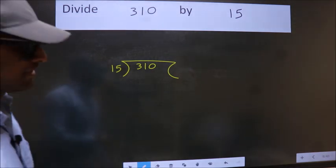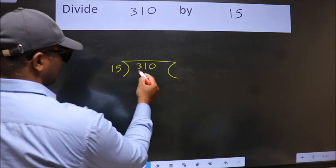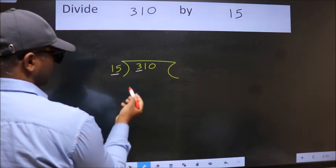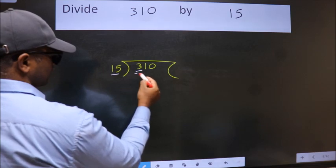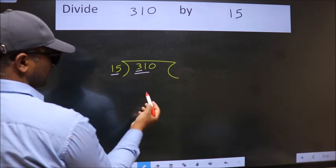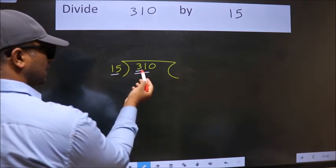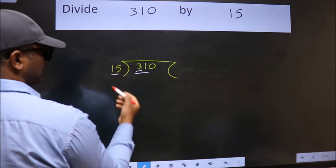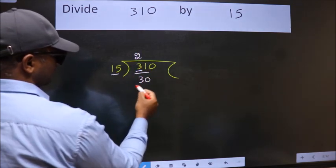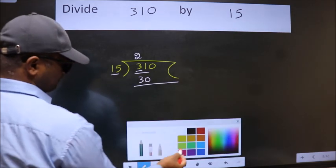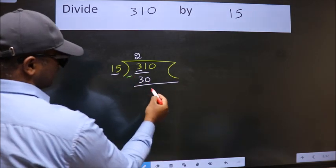Next, here we have 3. Here 15. 3 is smaller than 15, so we should take two numbers: 31. A number close to 31 in 15 table. 15 twos 30. Now we should subtract. We get 1.